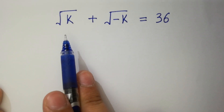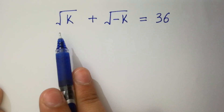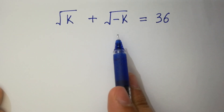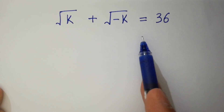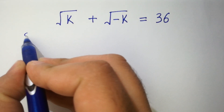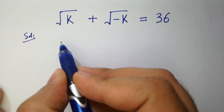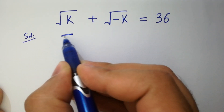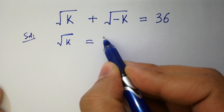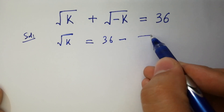Hello friends. Find the value of k if square root of k plus square root of minus k equals 36. Let's have a solution. It can be written as square root of k equal to 36 minus square root of minus k.